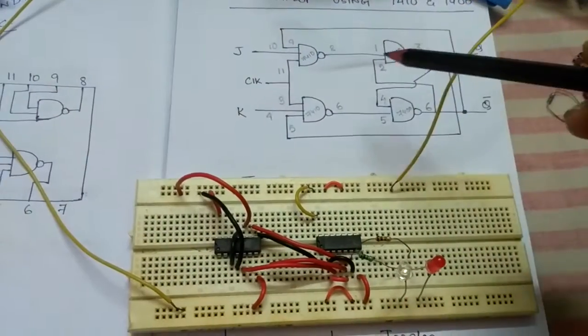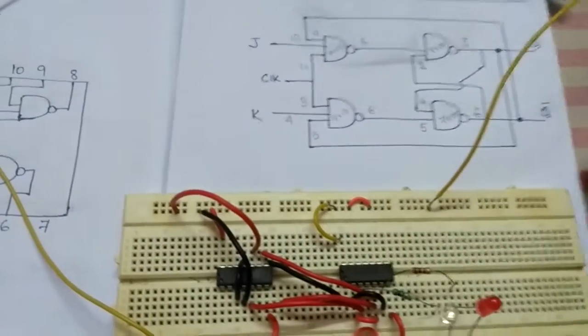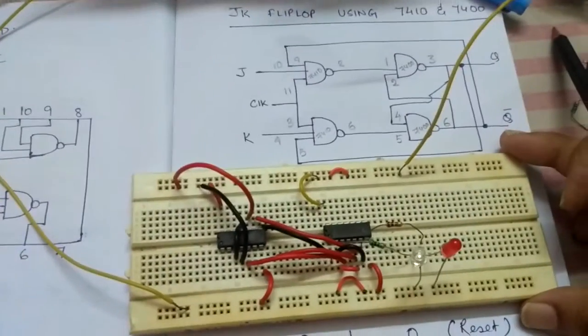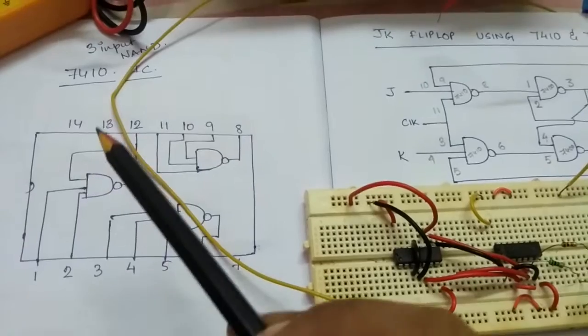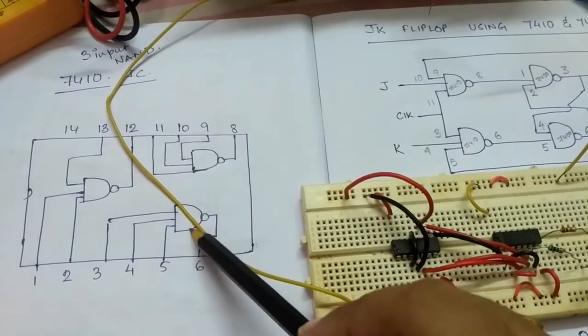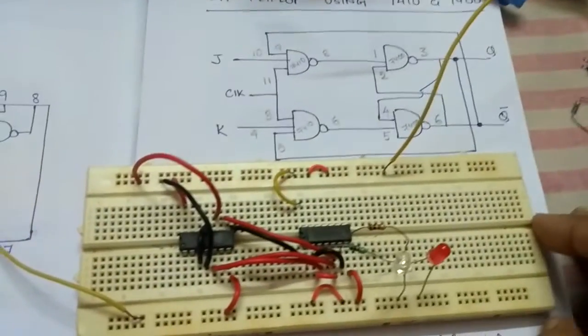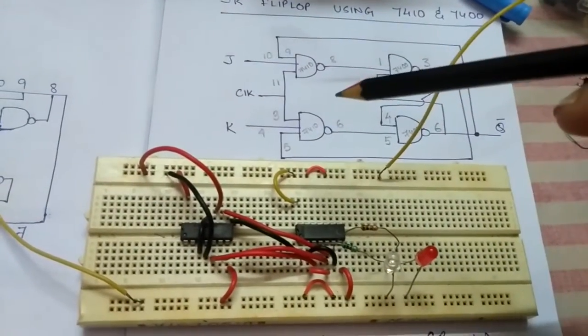This is the circuit that we're going to implement in breadboard. I have already done this and I'll show it to you. Before that, just get a glimpse of the 7410 IC pin configuration. I have used these two gates and I have labeled them in the figure as well for better understanding.